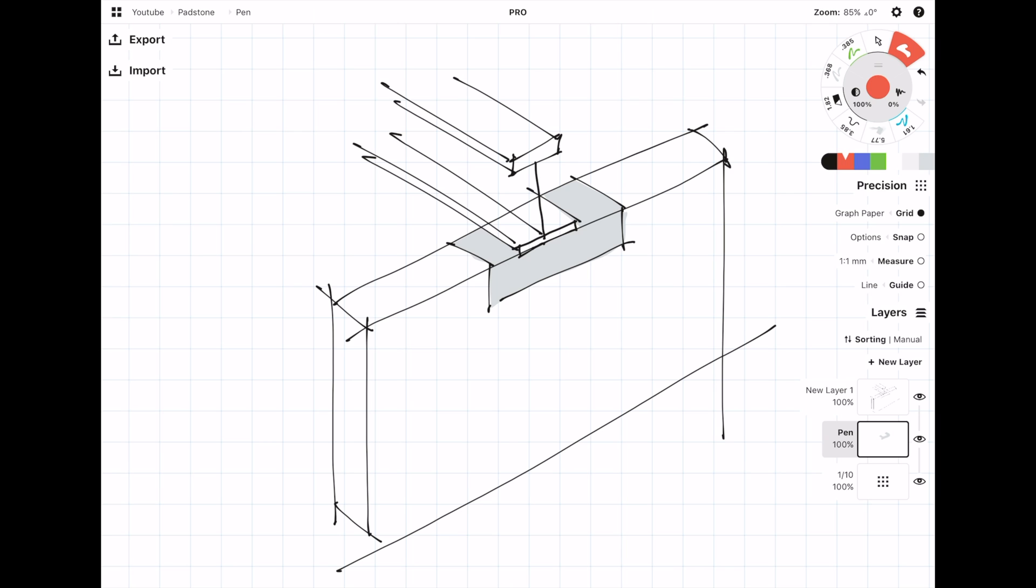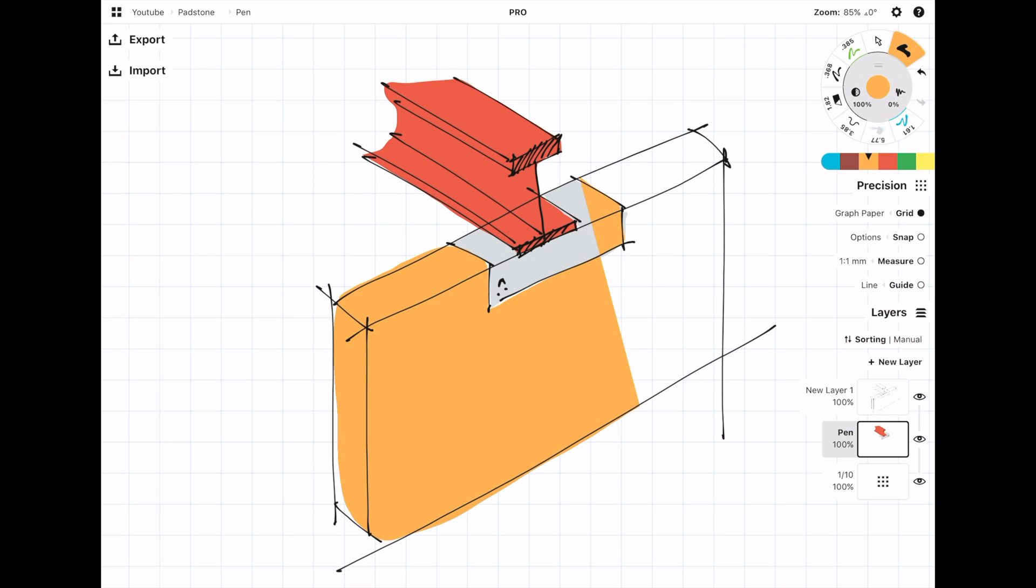What you'll tend to find in masonry structures is that the capacity for supporting a concentrated load without any form of spreader is actually very low. So basically on your drawings you're going to be wanting to specify a padstone whenever you've got a steel beam bearing directly onto a masonry wall. Unless the end reaction of the steel beam is very small you're almost guaranteed to need a padstone.